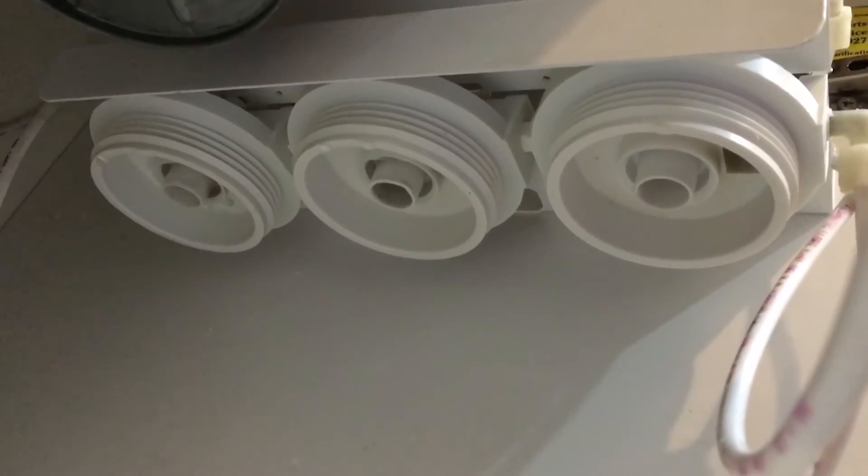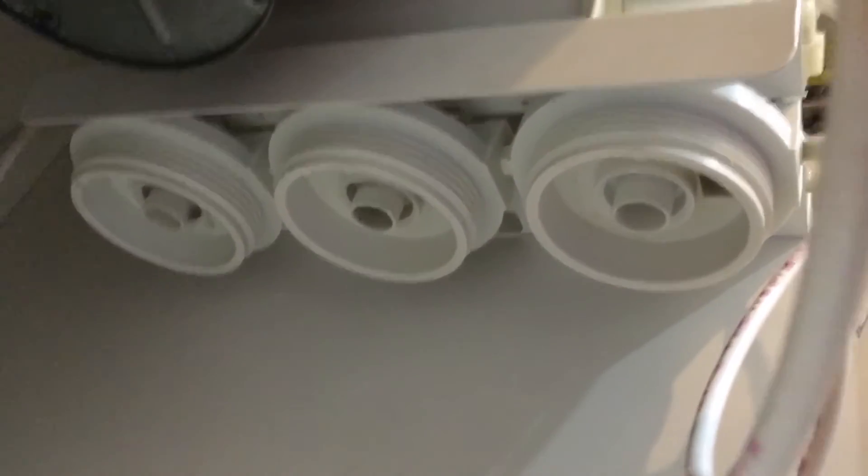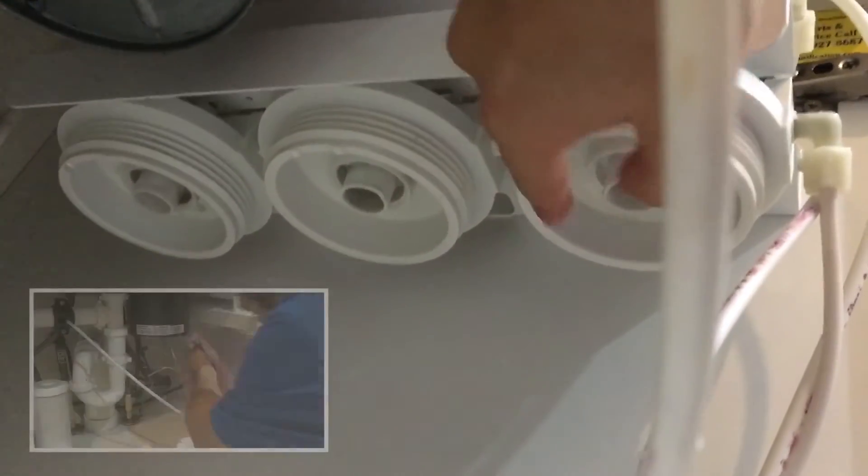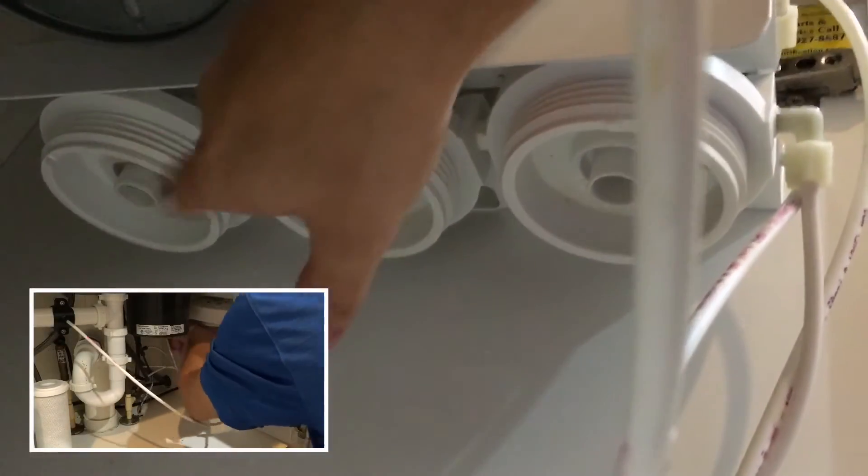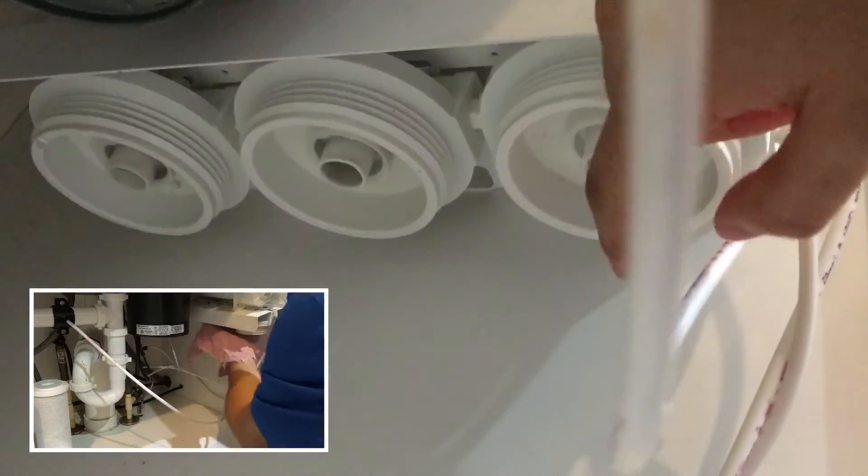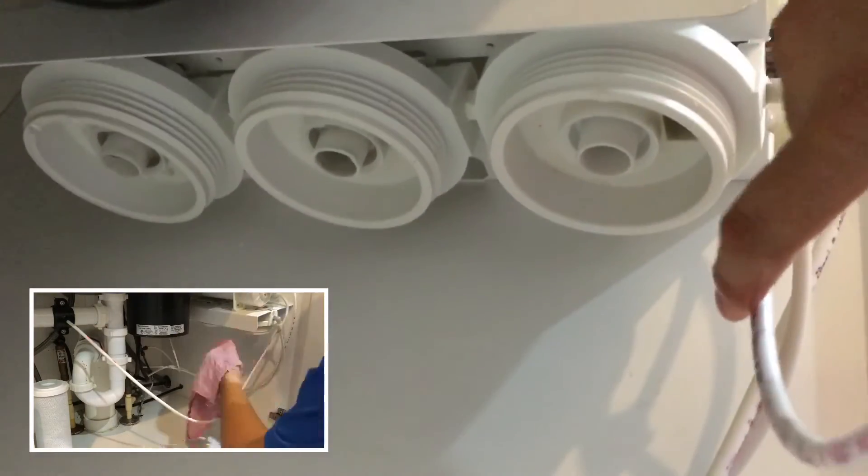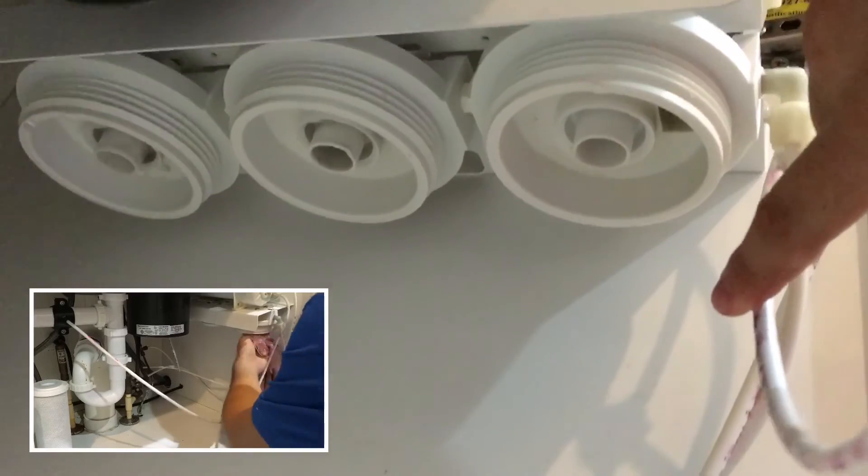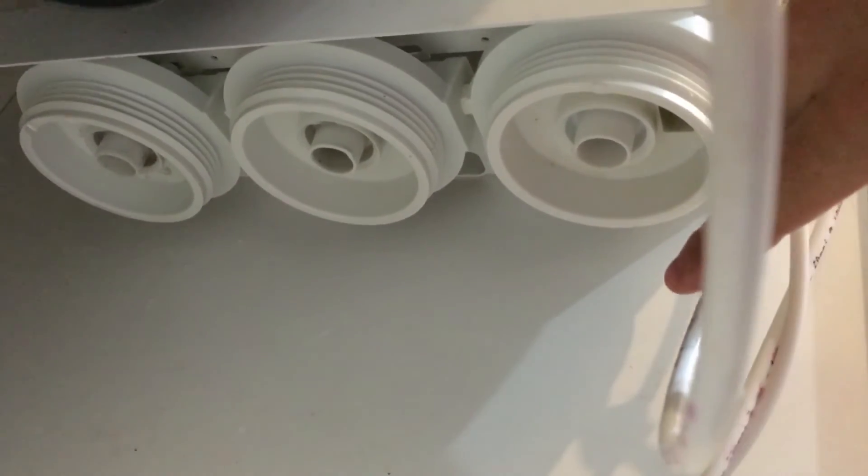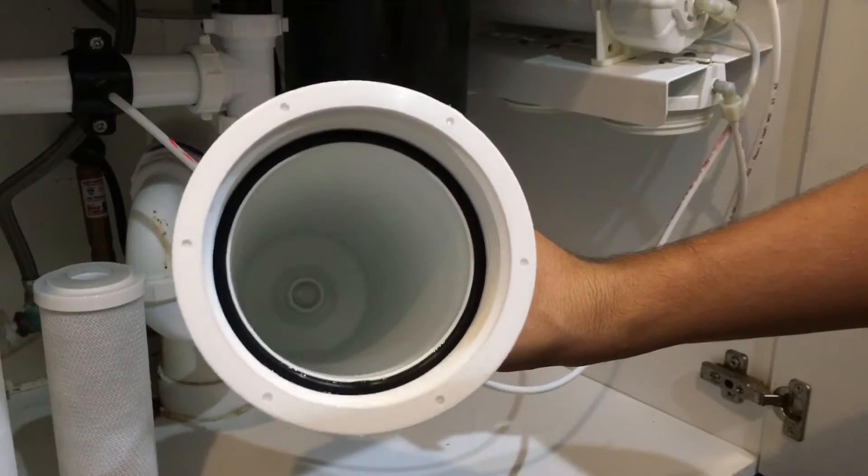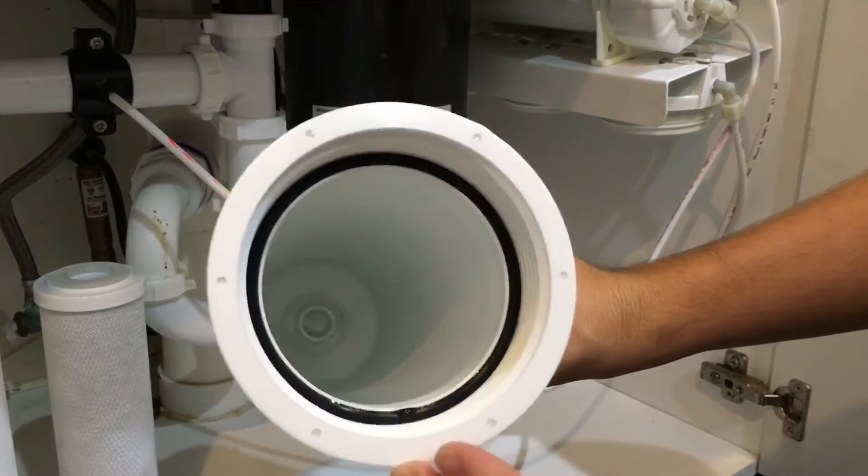In addition to cleaning the housings, I would take a wet rag and wipe on the inside of each connection just to get rid of any particles or any debris that's on it. Now that the housing is clean, it's ready for installation.